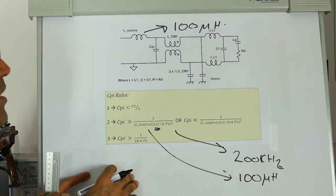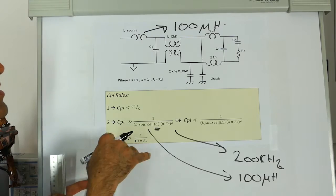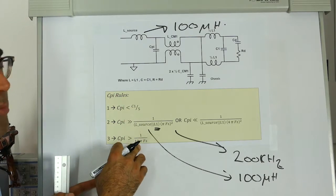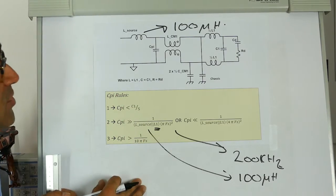Finally, there is rule three. Again, I won't go through the derivations of this which says Cpi has to be bigger than 1 over 10 pi Fs when Fs is the switching frequency.